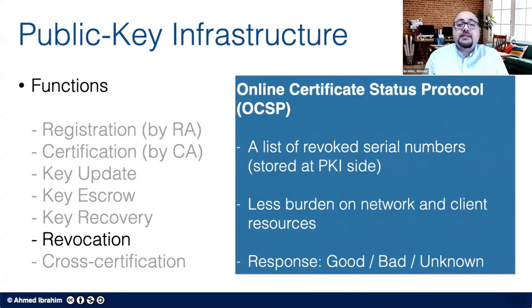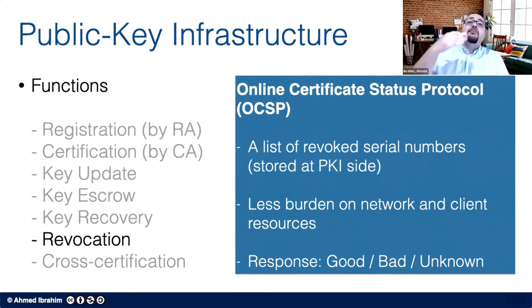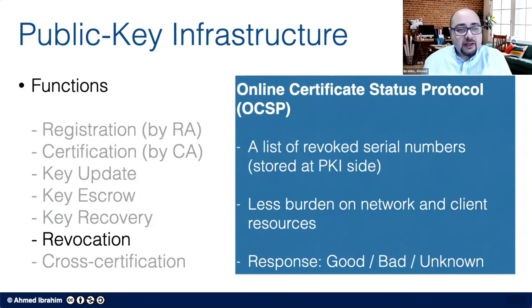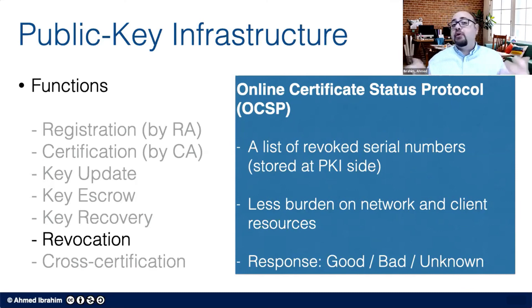To address CRL limitations, the Online Certificate Status Protocol, OCSP, was developed. It is still a list of revoked serial numbers, but it is stored at the PKI site and does not need to be downloaded. Instead, the person wanting to check a certificate's validity sends the serial number to the PKI, and the PKI responds with whether it is good, bad, or unknown. This causes less burden on the network and client resources — no need to download large CRLs or maintain large local storage for CRLs from multiple CAs.